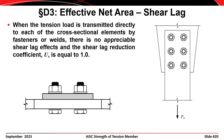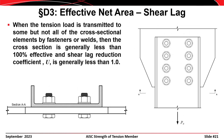In cases where all elements of a cross section are connected, all elements are expected to be fully effective and the shear lag reduction coefficient U is taken as 1. For a bar, there is only one cross-sectional element, that element is bolted to the adjacent gusset plate, and thus U equals 1.0. For a channel where the web is connected but the two flanges are not, the unconnected elements won't be fully effective at the net section, so a shear lag reduction coefficient less than 1 must be used.